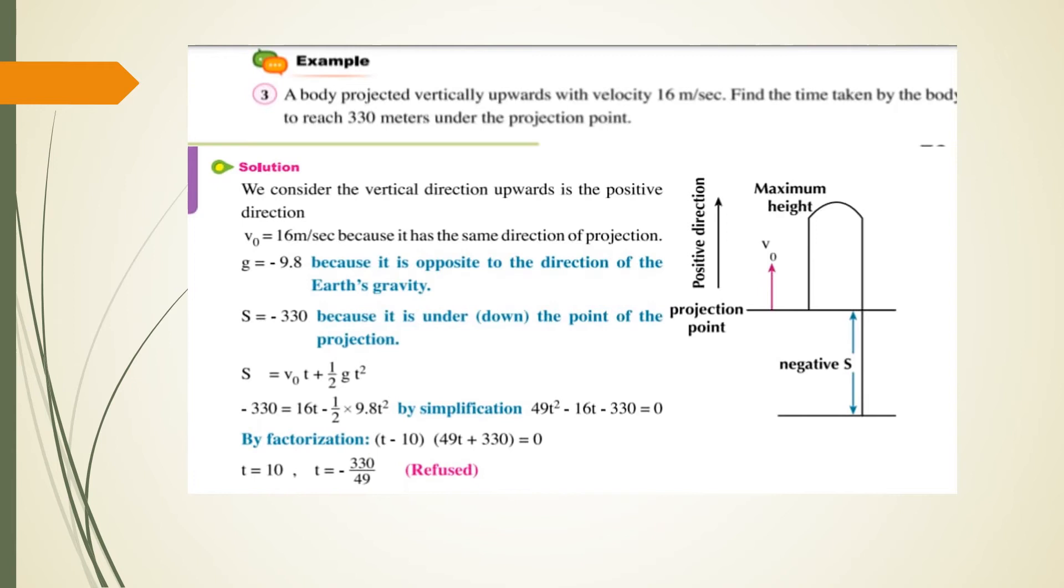V₀ equals 16 meters per second because it has the same direction of projection. And g equals negative 9.8 because it is the opposite direction. Then S equals negative 330.